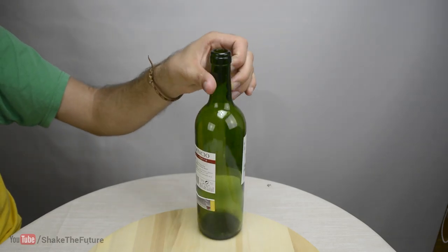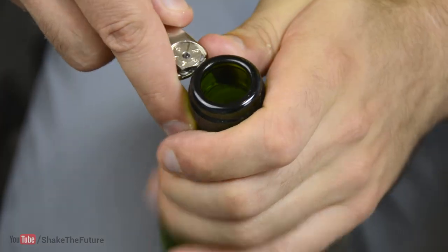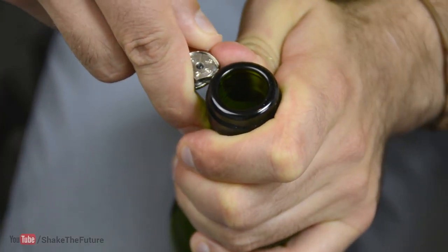You'll need a wine bottle like this one. Let's cut out the ring. I used a glass cutter to score the line.